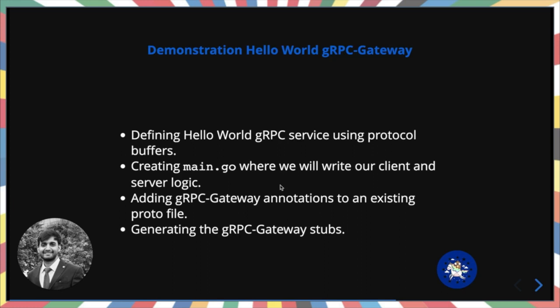These are the steps to write a simple gRPC-gateway, as I demonstrated using a Hello World program. Similar to writing a gRPC service, we define our service in a protobuf file, create a Go file such as main.go where we write the client and server logic, and also add annotations to the existing proto files. The annotations define how gRPC services map to JSON requests and responses.